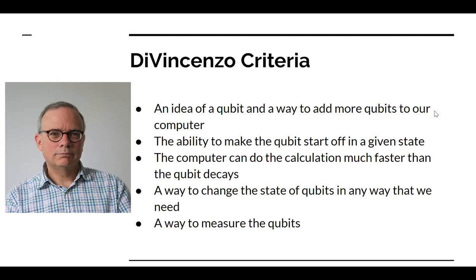You need a way to change the state of the qubits — just as you need to change the state of bits in a classical computer — and you need a way to measure the qubits. Once you can do all of these things very well, you have a quantum computer that works.